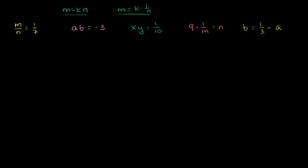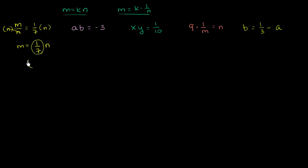Let's multiply both sides by n. We get m = (1/7)·n, because the n's on the left cancel out. This meets the direct variation pattern — m equals some constant times n. So this is direct variation.